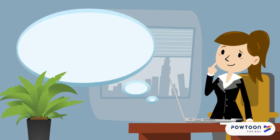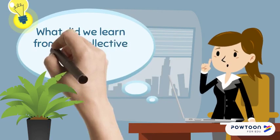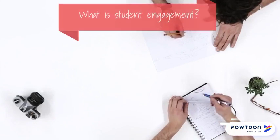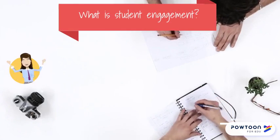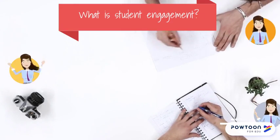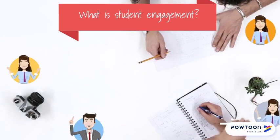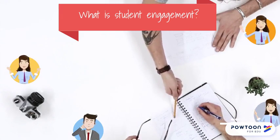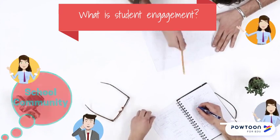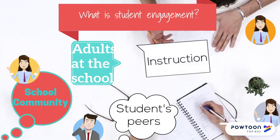As a group, what did we learn from our collective literature reviews about our topic? There is variation in how student engagement is defined and measured. The term is generally used to describe meaningful student involvement throughout the learning environment. Thus, student engagement is best understood as a relationship between the student and the following elements: the school community, the adults of the school, the students, peers, the instruction, and the curriculum.